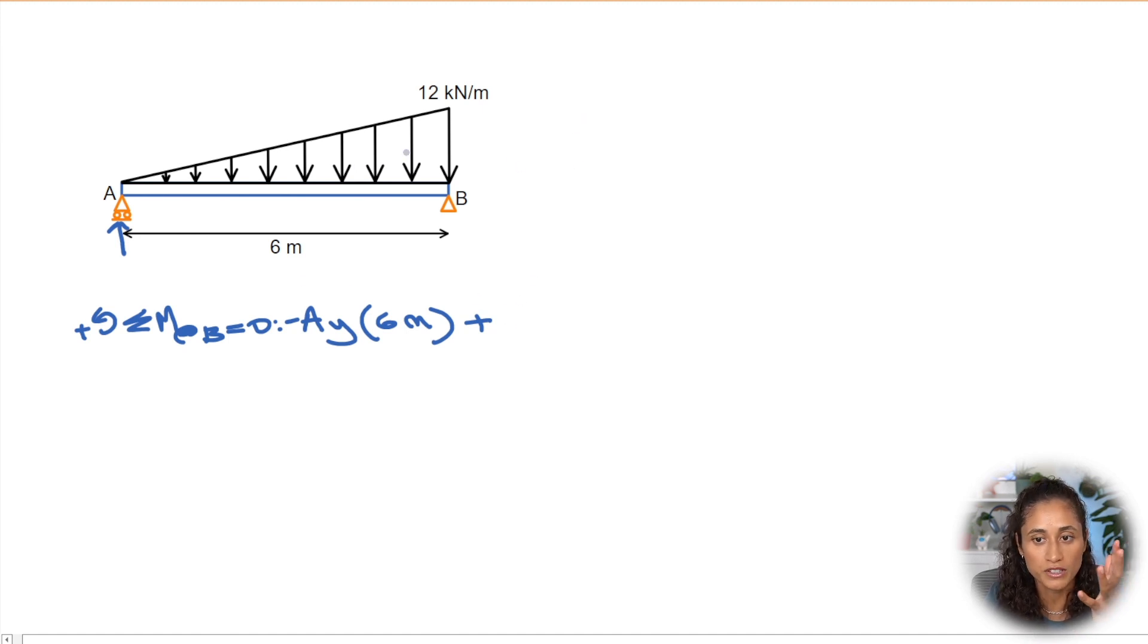Let's first find the force of this load. The force is just going to be the area of this triangle, which is one half times the base, which is six meters, times the height, which is 12 kilonewtons per meter. If you plug in these numbers in your calculator, you're going to get 36 with units of kilonewtons because meters cancel and we should have kilonewtons as the unit of force.